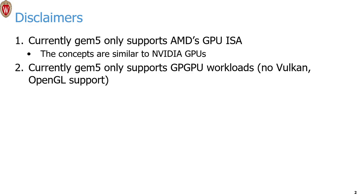A couple of disclaimers to address common questions upfront: right now GEM5 only supports AMD and ARM to a little bit, but mostly just AMD GPUs. The concepts are similar to other companies like NVIDIA though. We're also going to talk about what you commonly hear referred to as general purpose GPU or GPGPU workloads. There's no support right now for things like OpenGL or Vulkan if you're trying to run true graphics workloads — we're not going to talk about that today.